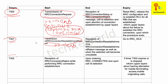The third timer is T302. T302 starts upon reception of an RRC Connection Reject while performing the RRC Connection Establishment procedure. It is a kind of negative scenario timer — whenever there is a failure of RRC connection establishment, T302 starts. It ends when RRC is connected again, or upon cell reselection.